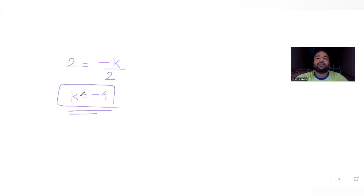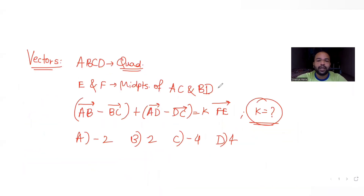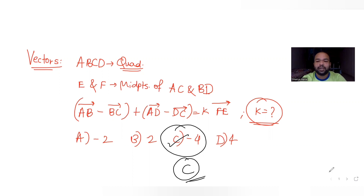Since the same vector (B bar plus D bar minus A bar plus C bar) appears on both sides, we can equate the remaining parts: 2 equals minus K divided by 2. Solving this gives K equals minus 4. So the value of K is minus 4, which matches option C — the correct answer.